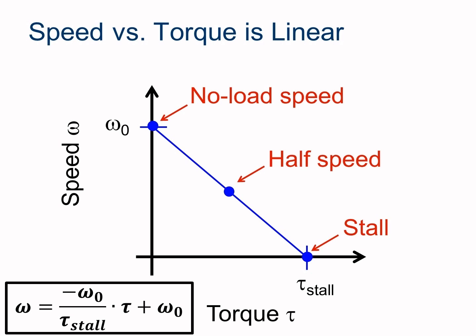Where did this equation come from? We know from your algebra classes that the equation of a line is y equals mx plus b. In this case, y is speed omega. m is the slope of our line. The slope is the rise over the run. The rise of this line is going downward by omega naught, so we have a negative omega naught as our rise. And the run, the distance along here, is equal to tau stall. So negative omega naught over tau stall is our slope.